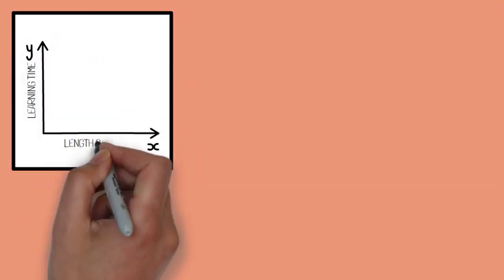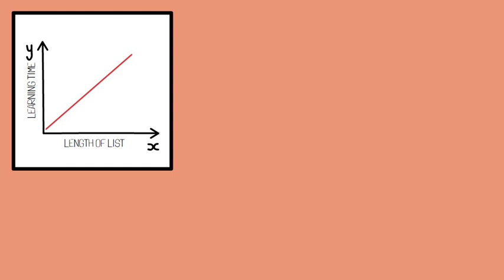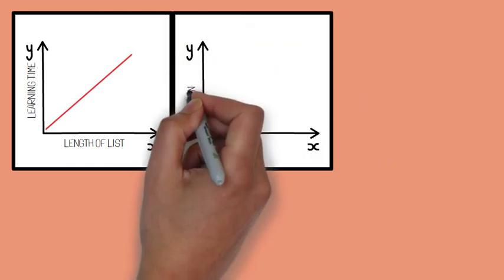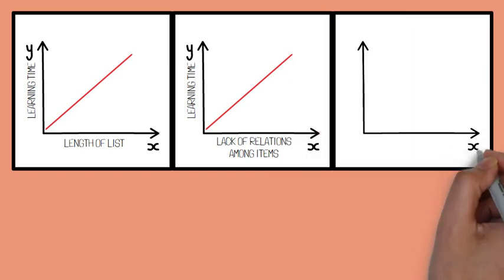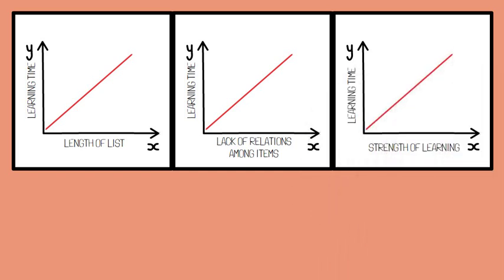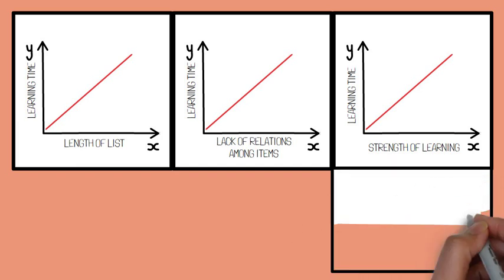Learning time increases with the increase in length of the list, occurrence of words with low association values, or lack of relations among the items in the list. The more time it takes to learn the list, the stronger the learning will be. In this respect, psychologists have found that the total time principle operates.